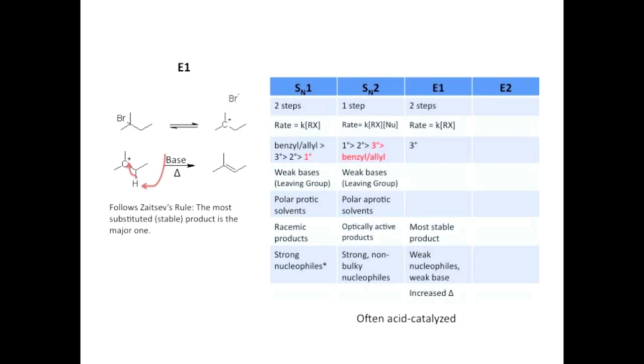So that's E1. Of the four possible reactions, E1 is the least common, so unless you get info on the passage on the MCAT that would really indicate that it's E1, it's probably not the major mechanism.